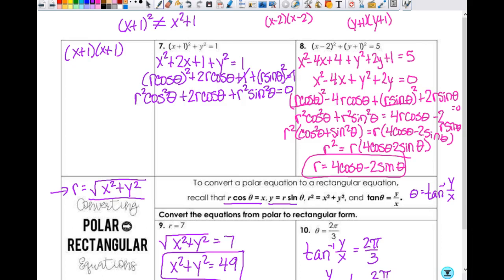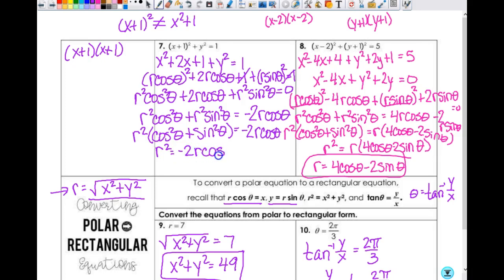So now what I want to do is I want to get my squareds on one side, my things that aren't squared on another side. So I'm going to get r squared cosine squared theta plus r squared sine squared theta equals, so when I move this over here, it's going to be negative 2r cosine theta. Everybody with me so far? So on the left-hand side, do I have a GCF? I do. It's r squared. So I factor out my r squared. That leaves me with cosine squared theta plus sine squared theta. That equals negative 2r cosine theta. So what's cosine squared plus sine squared? One.